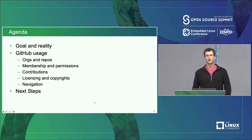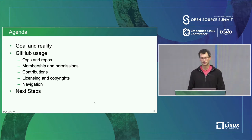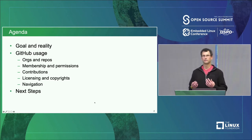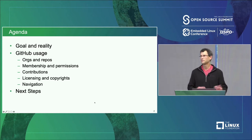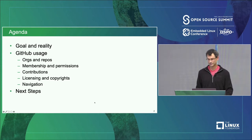I'll start by talking a little bit about our goal, and then the reality of what happened as we started using GitHub. Then I'll dive into a bit more detail of our usage of GitHub, the various functionality in it, and how we made use of it, and things we kind of learned along the way that maybe we hadn't anticipated, or where we thought we could do a little better. And then I'll close with some next steps, because we've made some improvements but there's a lot left to do.